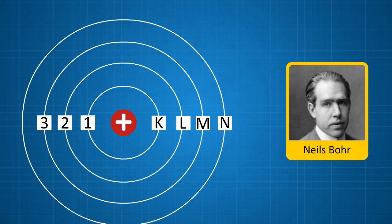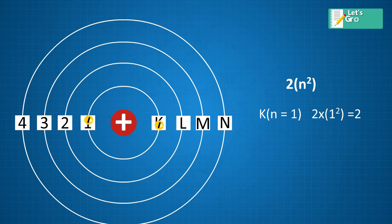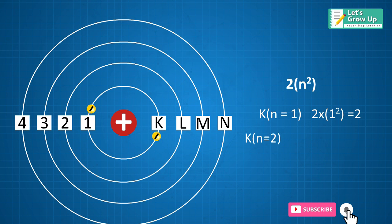He provided the formula 2N² to determine the number of electrons in each shell. For example, in the first shell K, N equals 1, the number of electrons would be 2 times 1² equals 2. And in the second shell L, N equals 2, the number of electrons would be 2 times 2² equals 2 times 4 equals 8.